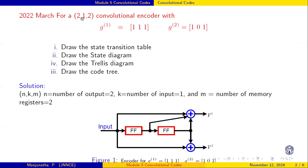We will take one example: a (2,1,2) convolutional code with connectivity G1 = 112 and another output connection of 10. This is a 2-output, 1-input code with 2 memory registers.